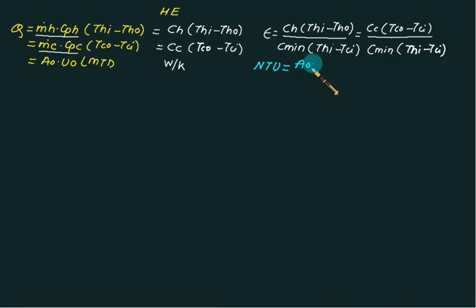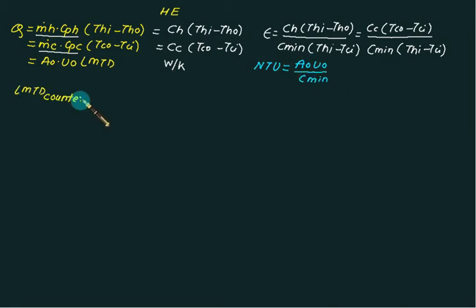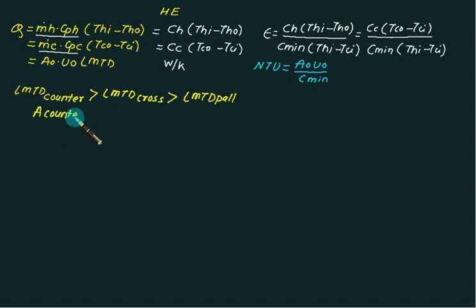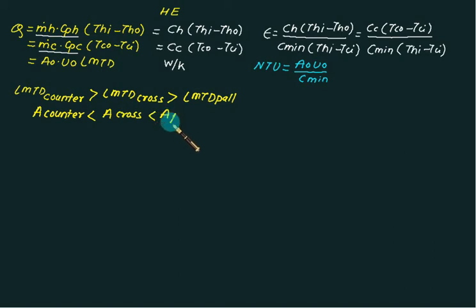A0 × U0 divided by C_minimum × LMTD of cross flows, LMTD of parallel flows. The area of counter flow is less than the area of cross flow, which is less than the area of parallel flow.